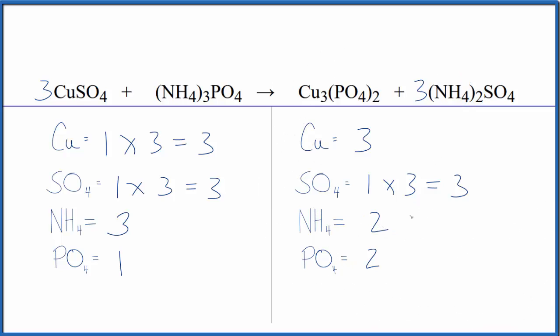If we put a two in front of the ammonium phosphate, we have three ammonium ions times two, so that gives us three times two, six. Those are balanced, and then the one phosphate times two, that's balanced.